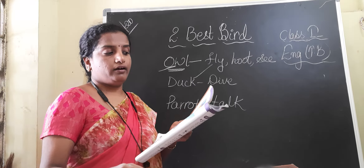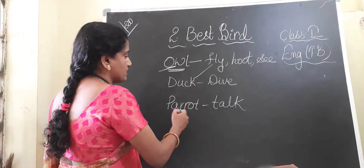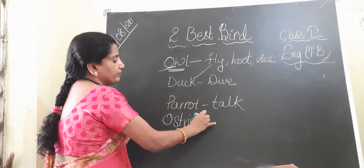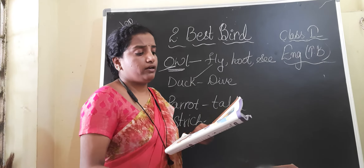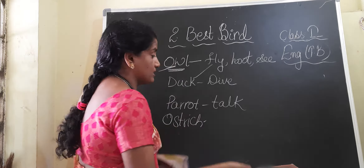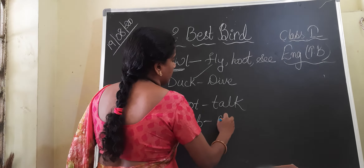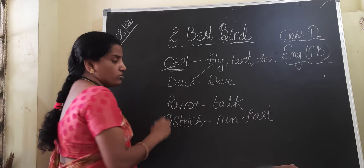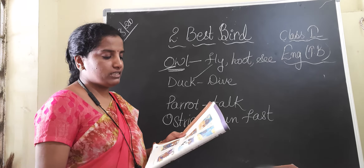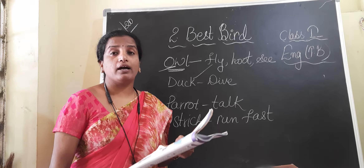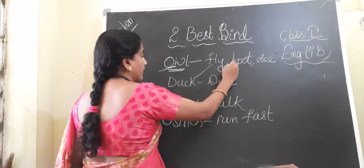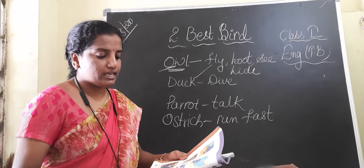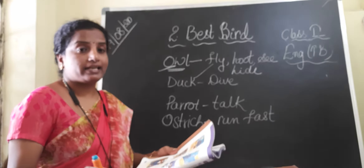But then the ostrich bird — the ostrich is also a bird — says, 'Only you can see a long way, but I can run fast.' The owl cannot run fast, but the ostrich can run fast. The owl can hide among the leaves, whereas the penguin can slide on ice.